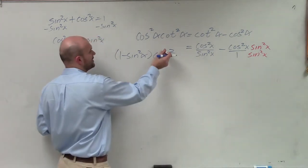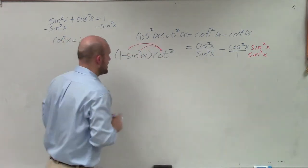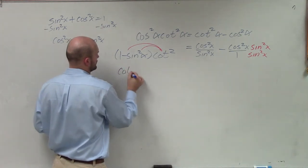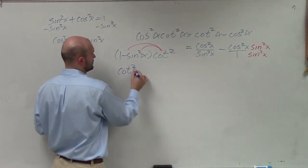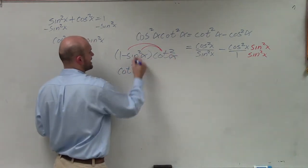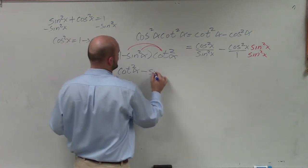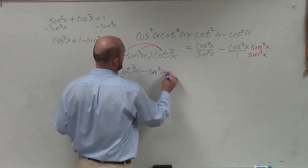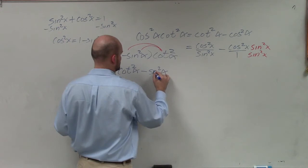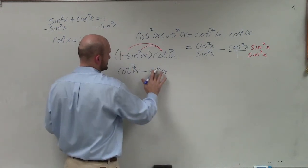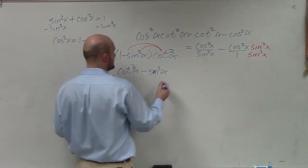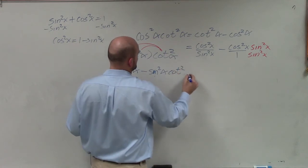Now, I'll apply distributive property. So I have cotangent squared of alpha minus sine squared of alpha times cotangent squared of alpha.